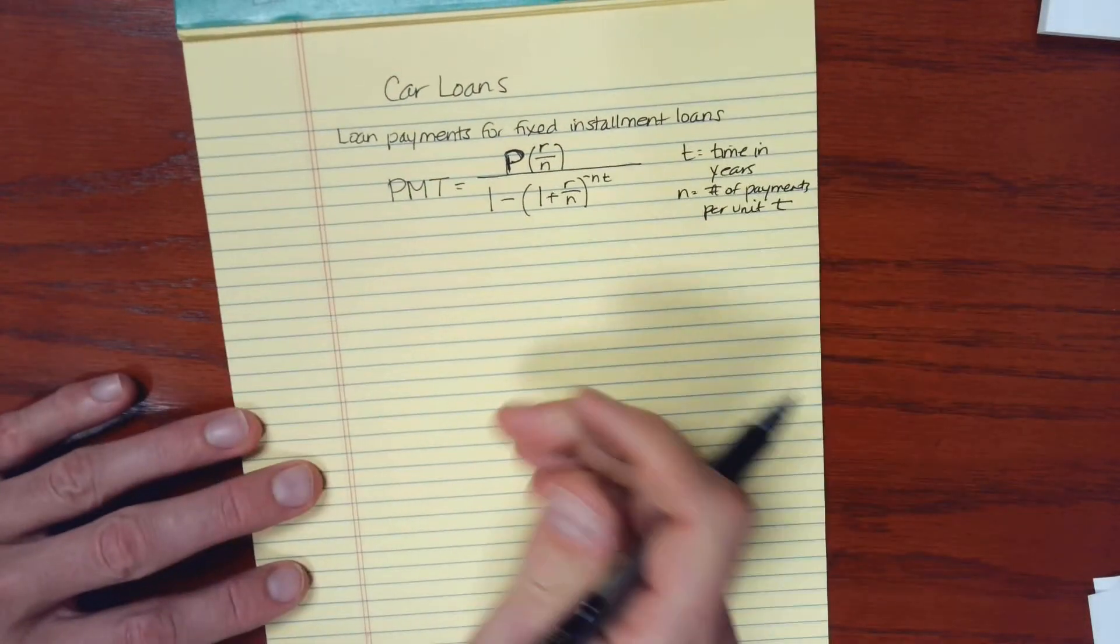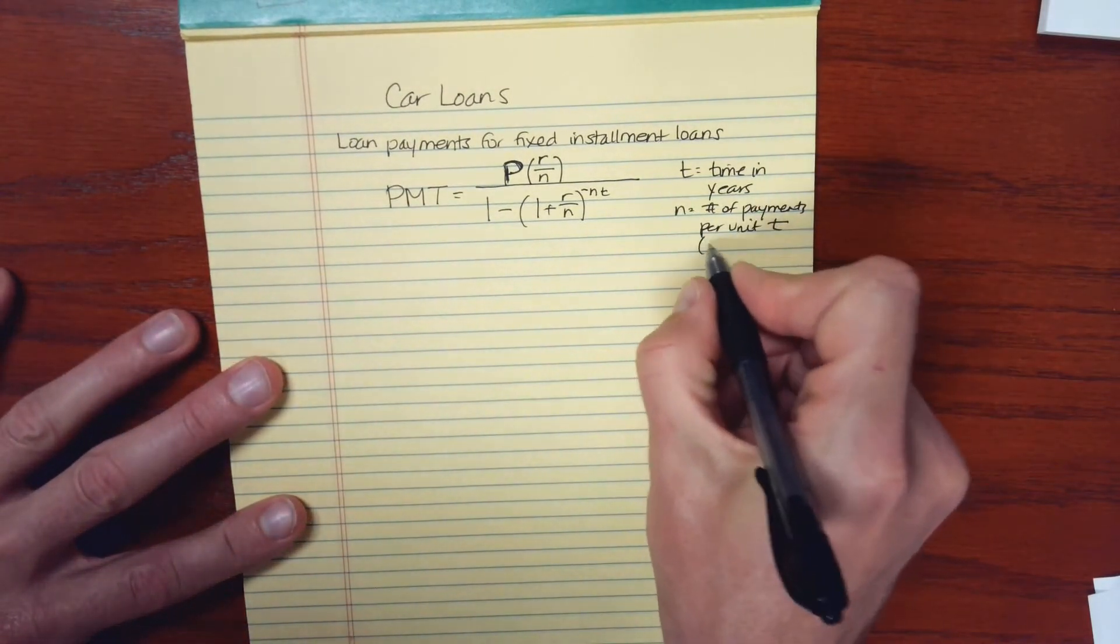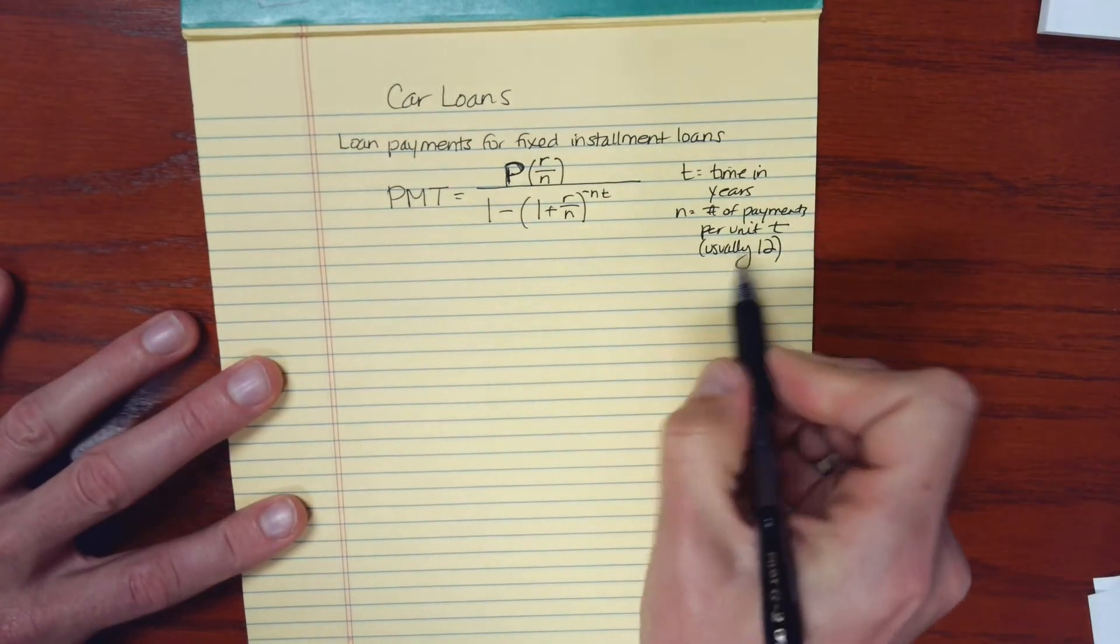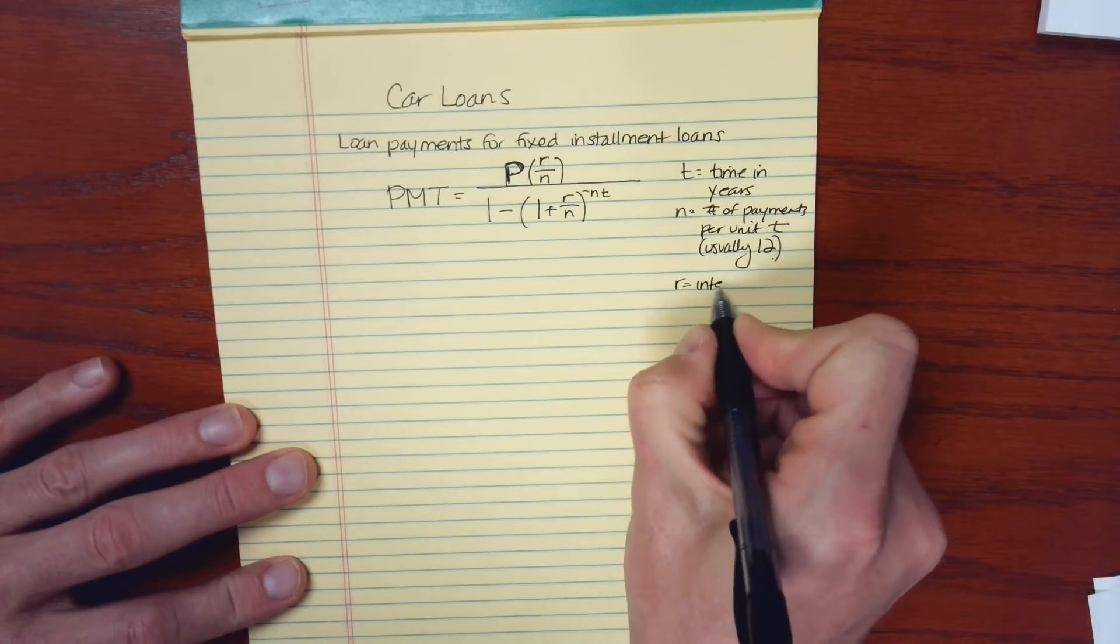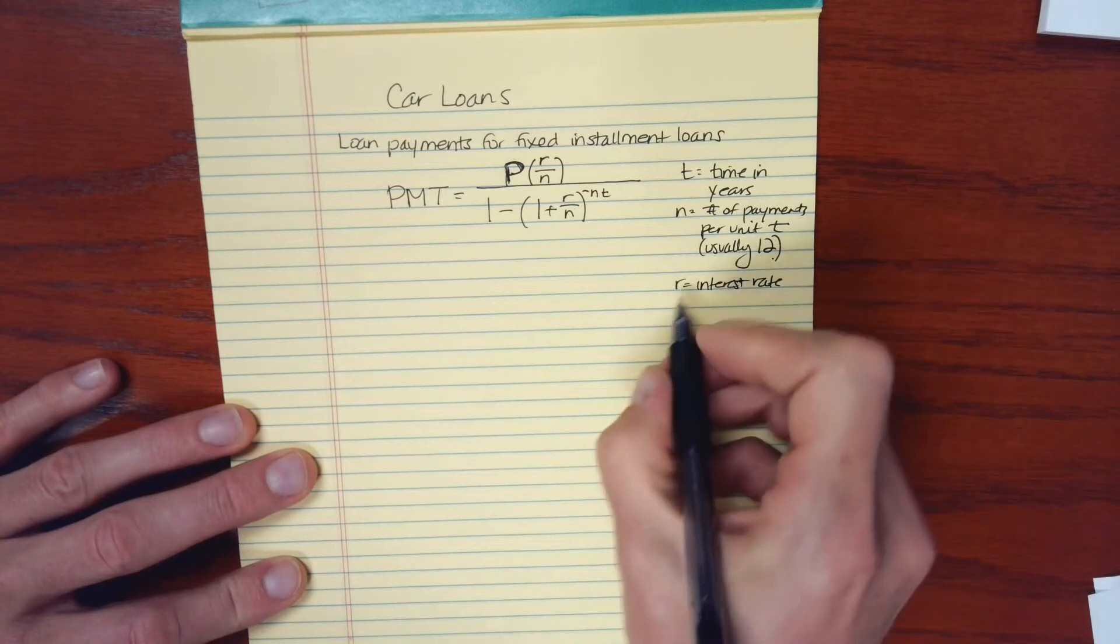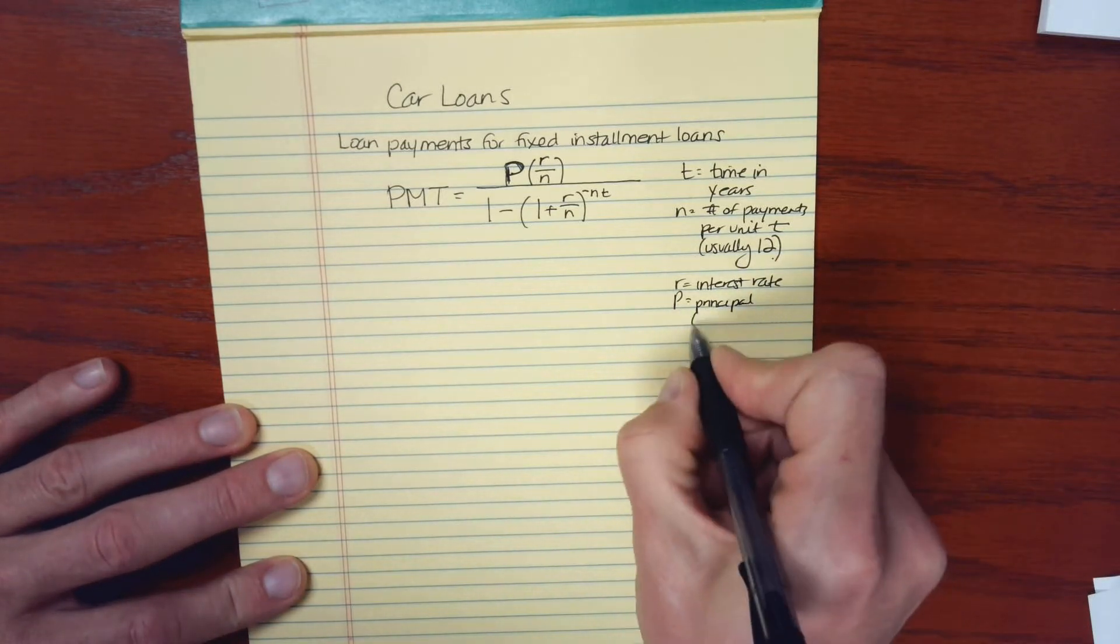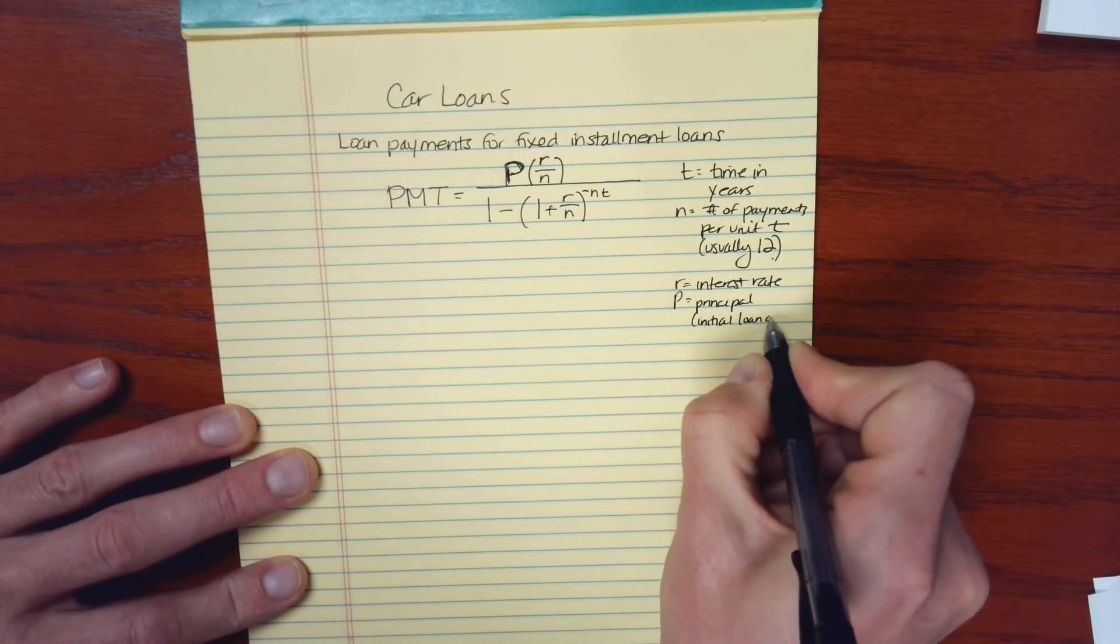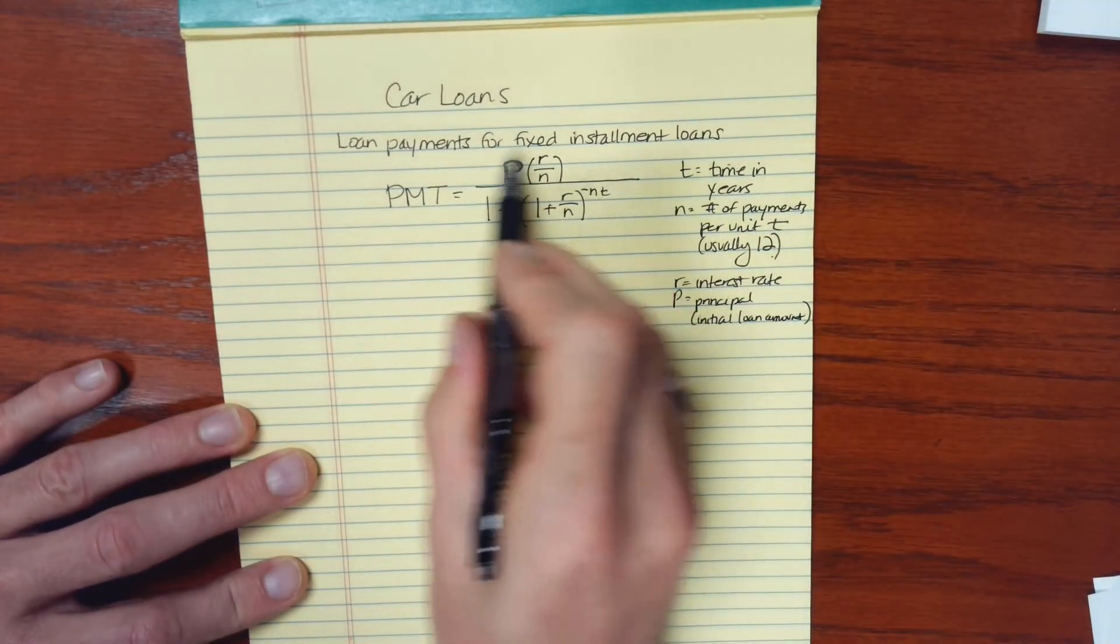And N is usually the number of payments per unit of T. And so for any auto loan that I've seen, N is usually 12, that you would make monthly payments. So 12 times a year. So R is the interest rate, and usually we'll express this as a decimal. P is the principal or the initial loan amount. And I think those are all the pieces that we need here.